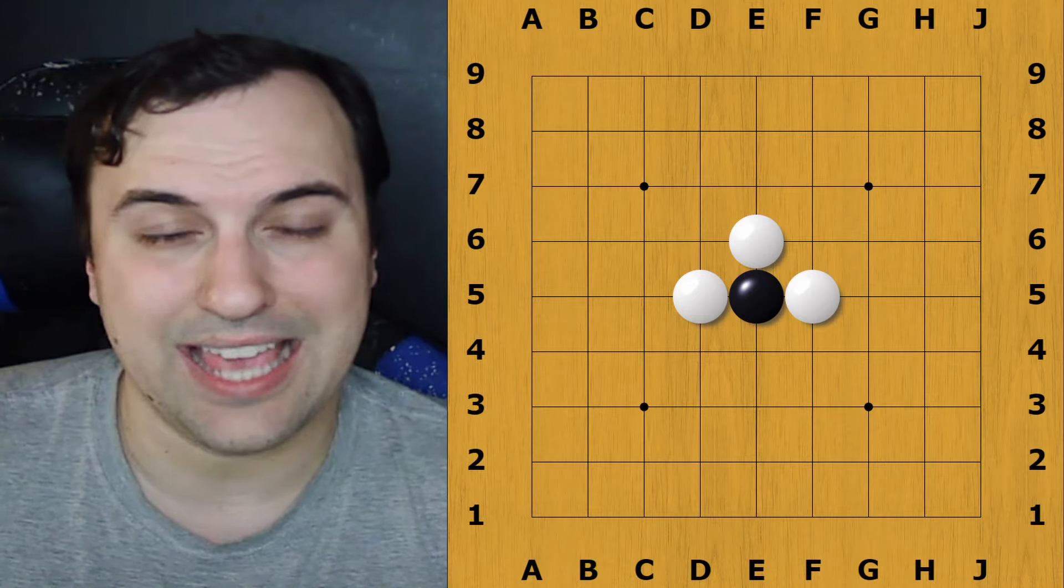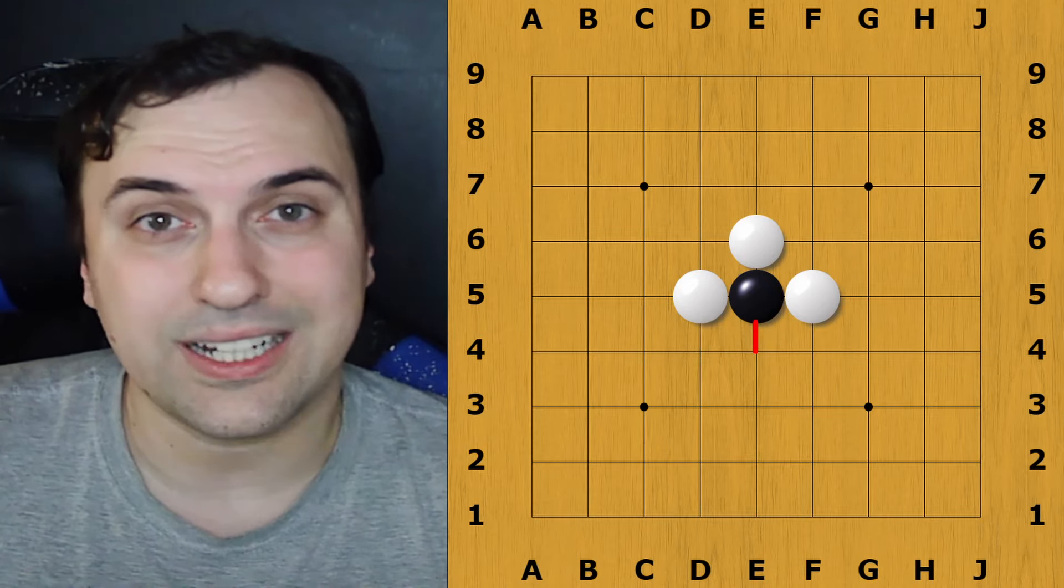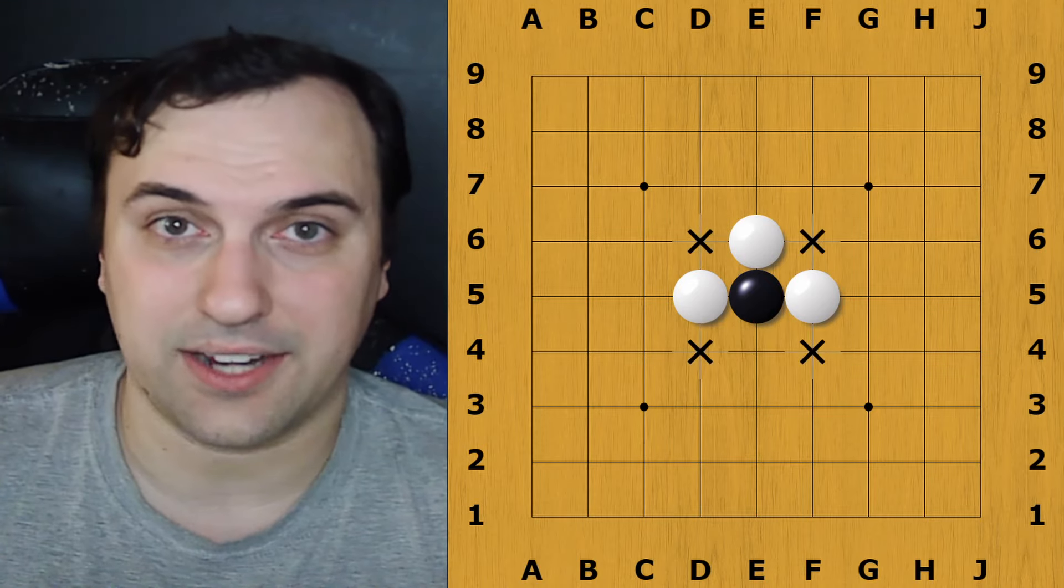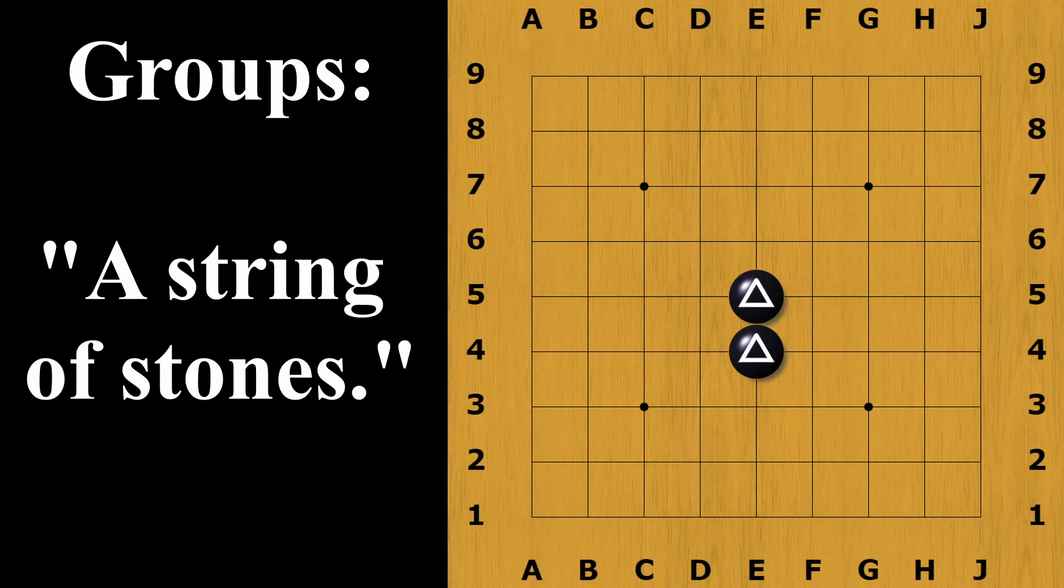The way a stone can gain liberties is by connecting with other stones. Stones are connected through the lines, not diagonally. Stones connected in this way are called groups. When a group loses all of its liberties, then all the stones are removed.